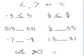Then I have 0.13 and 0.31. Well, if I compare place value for place value, in the tenths place I have a one and a three over here.